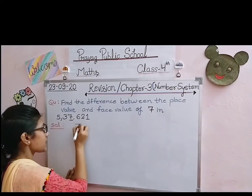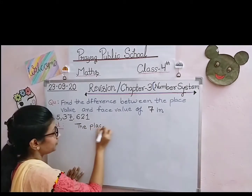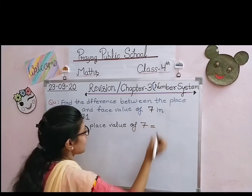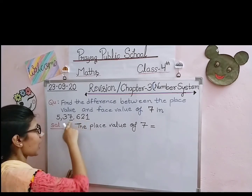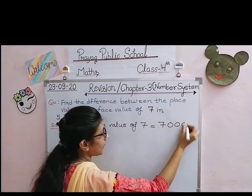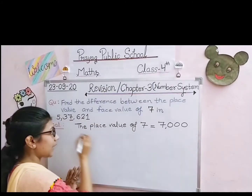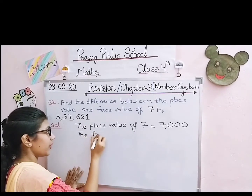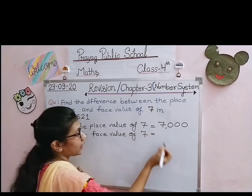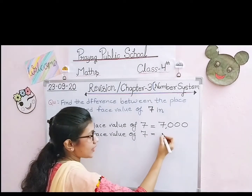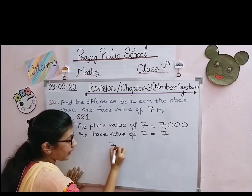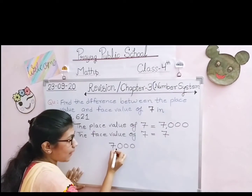तो चलिए। The difference between the place value and face value of 7 — इस number में 7 के place value और face value दोनों को पहले find out करना है, उसके बाद difference। The place value of 7: 7 thousands के place पे है, 1000 में 3 zeros होते हैं, तो 7 के बाद 3 zeros put करेंगे — 7,000। The face value of 7: किसी भी digit की face value वो digit itself होती है, तो face value of 7 is 7। अब 7,000 में से 7 को subtract करना है।